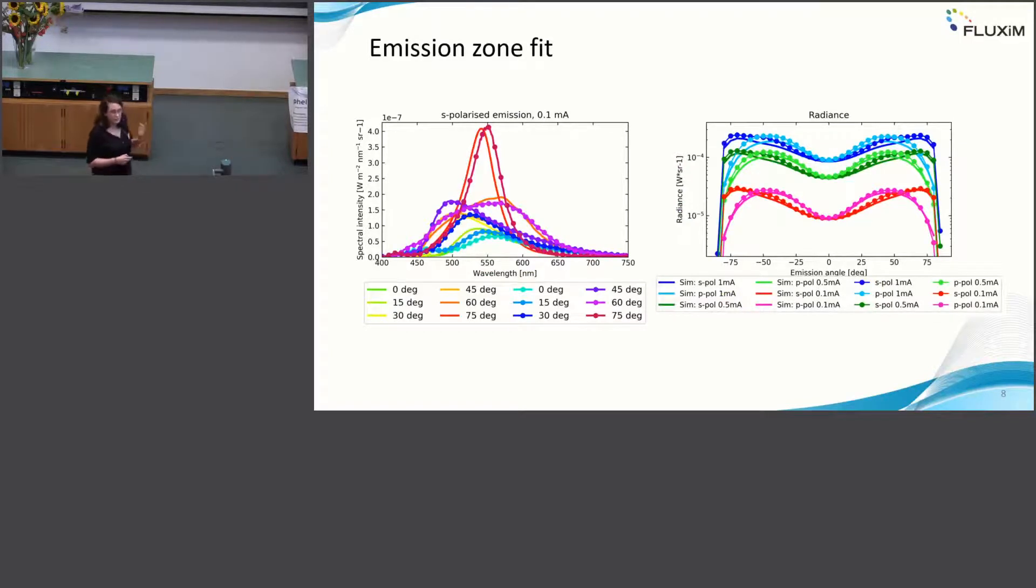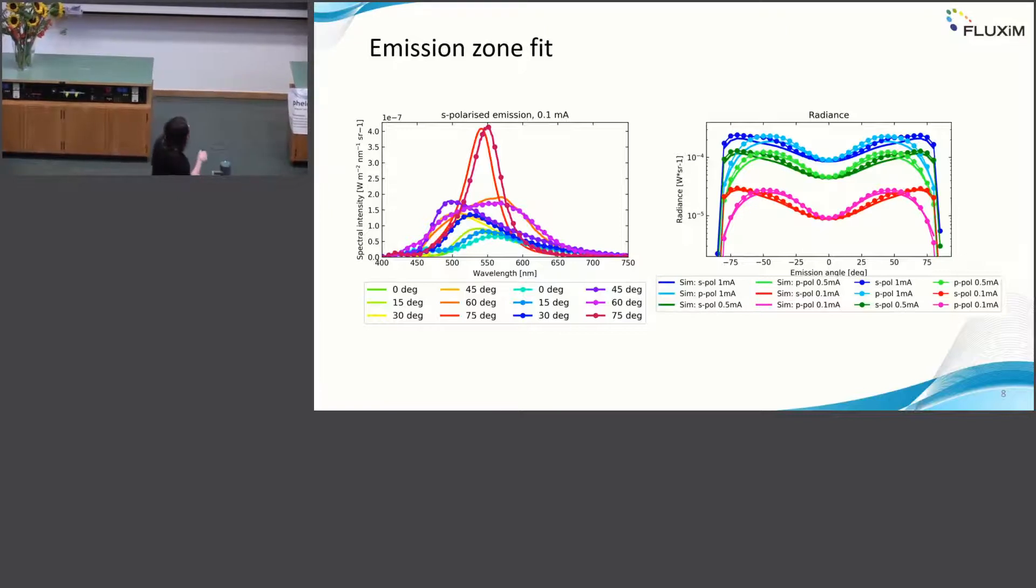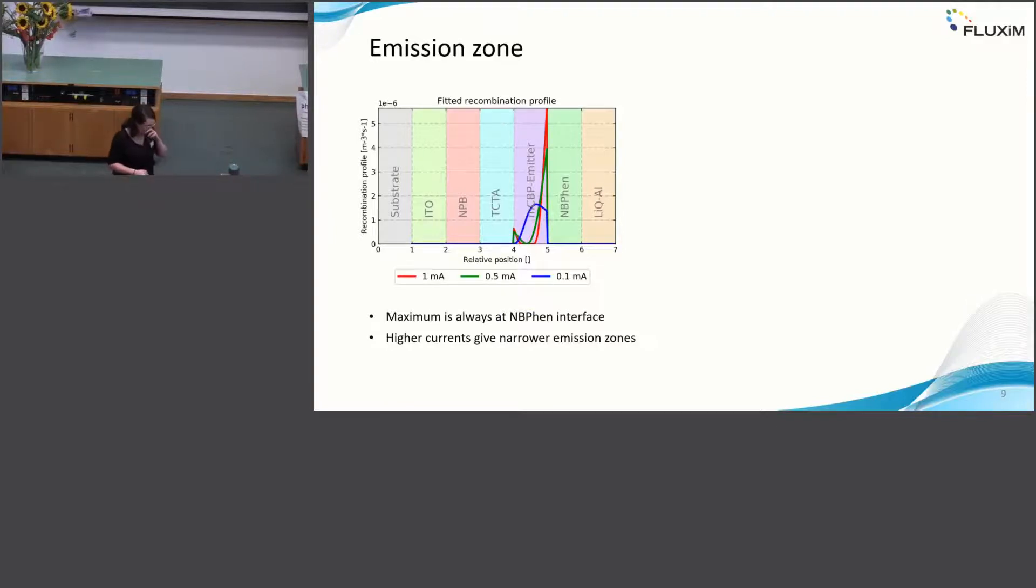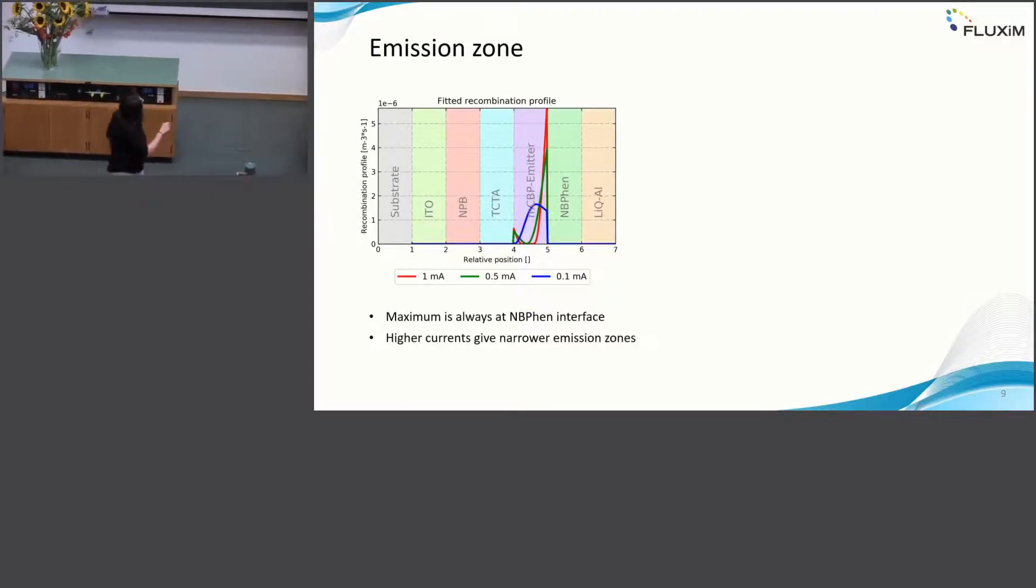One thing I forgot to mention, we also use the approach that Marcus described. We used a large ETL thickness such that you get the detuned OLED and that's why you have this large shift in spectral emission as a function of angle. When I overlap them, you see that there is room for improvement, but still it works quite nicely. The radiance fits fairly well for all the three different current densities. Now the interesting thing is how does the emitter distribution look like?